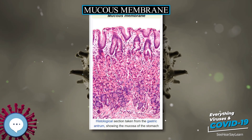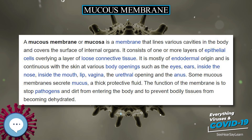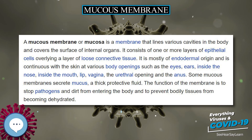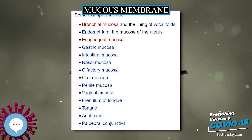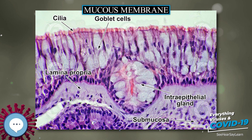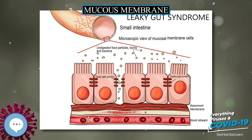Mucosa lining the bladder protects the underlying tissue from urine. In the uterus, the mucous membrane is called the endometrium, and it swells each month and is then eliminated during menstruation. Niacin and vitamin A are essential nutrients that help maintain mucous membranes.